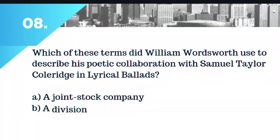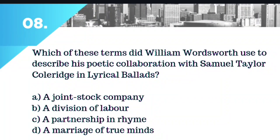Question number 8. Which of these terms did Wordsworth use to describe his poetic collaboration with Samuel Taylor Cordridge in Lyrical Ballads? Option A: A joint stock company. Option B: A division of labor. Option C: A partnership in rhyme. Or Option D: A marriage of true minds. The right answer is Option B: A division of labor.